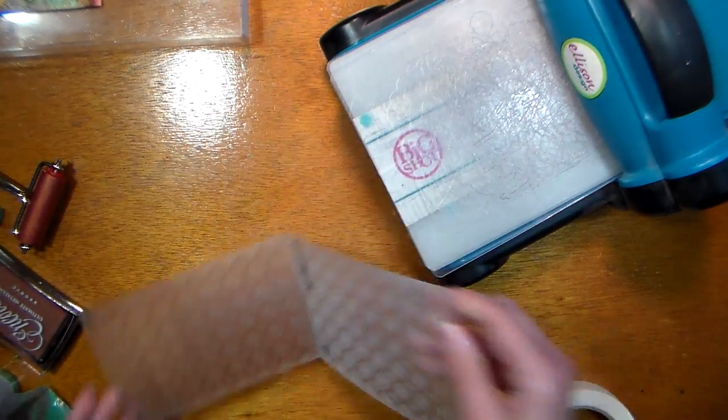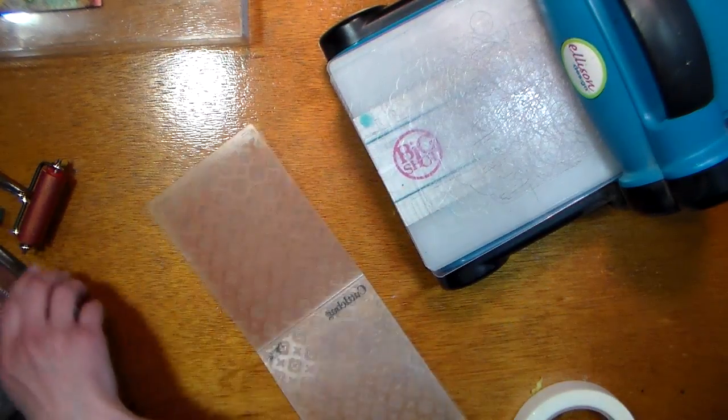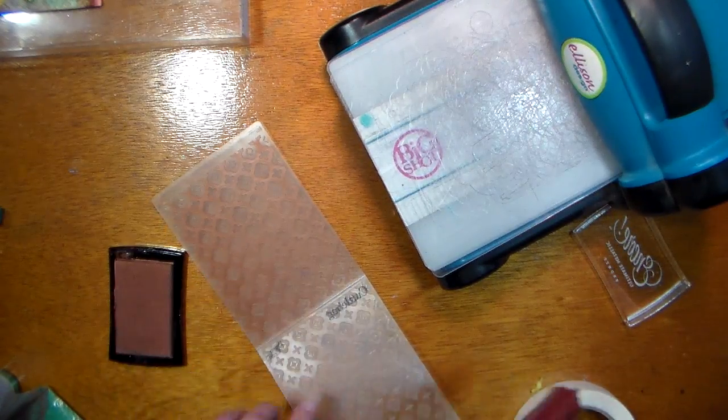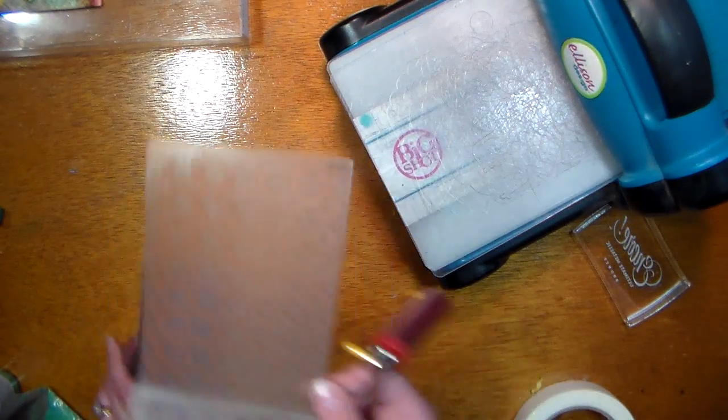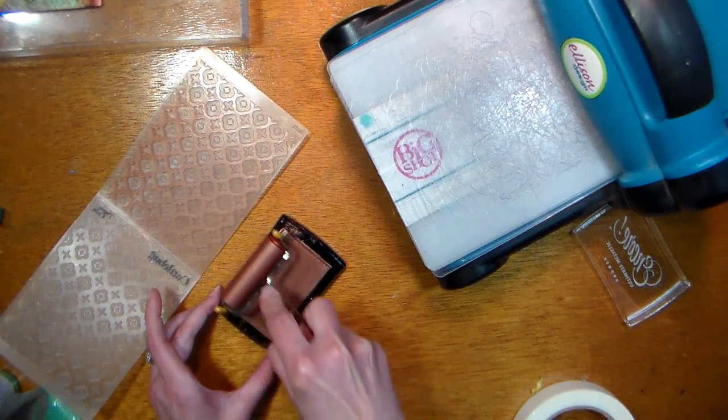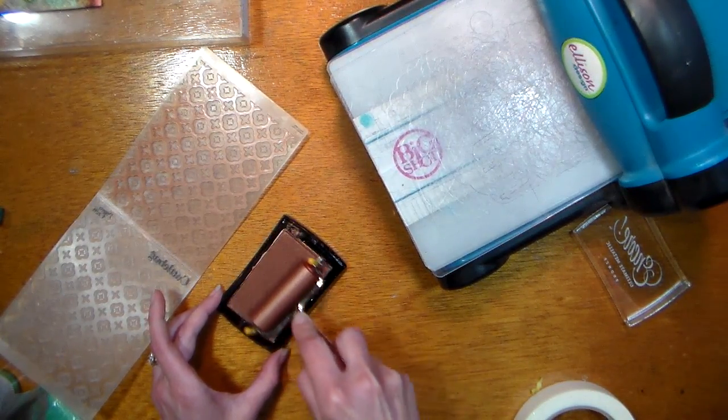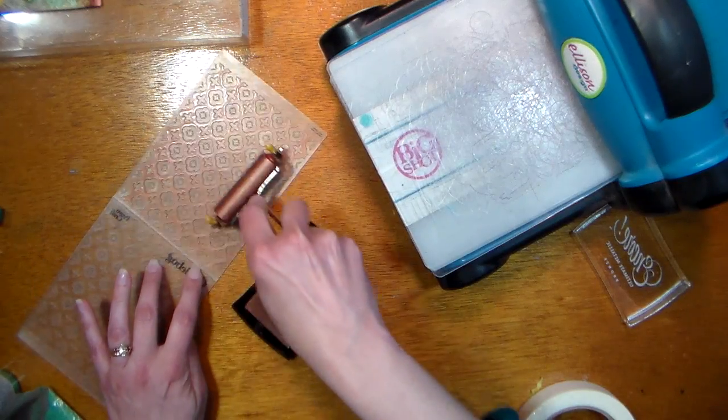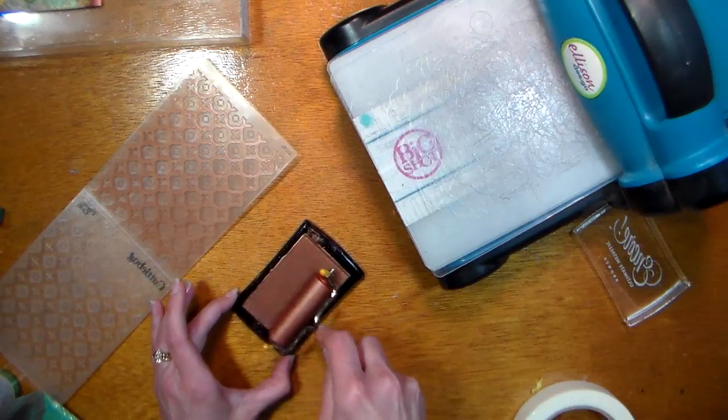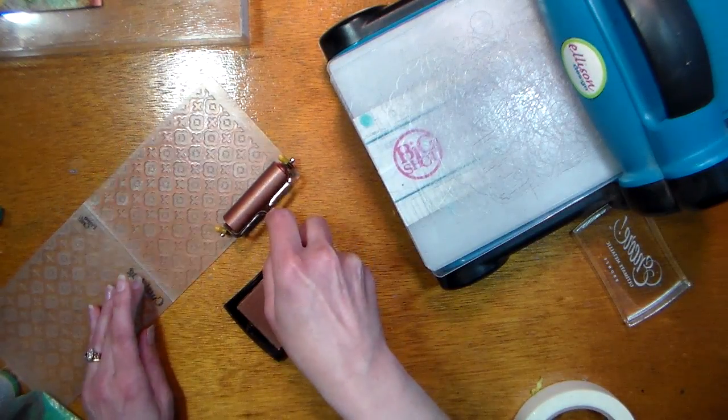So what you want to do is begin with an embossing folder and an ink pad and a brayer. Now you could just smoosh your ink pad down there on the embossing folder, but it's not gonna give you as good a result, so I'm just using this mini brayer to ink up, to get some pigment ink on my little roller here, and I'm just giving it a nice coat of ink.